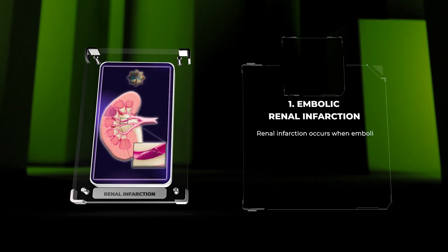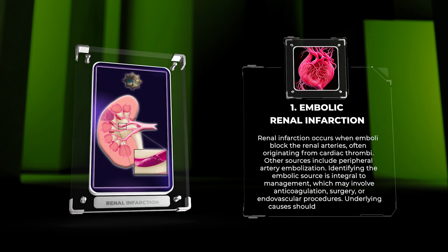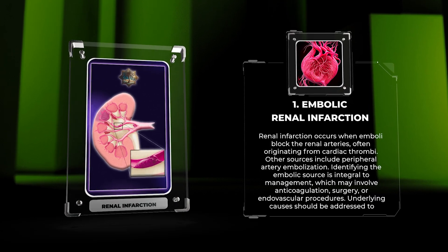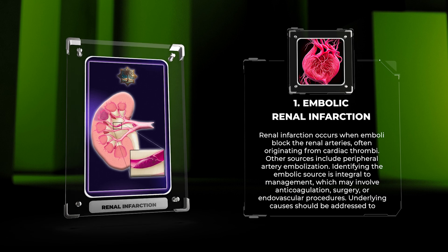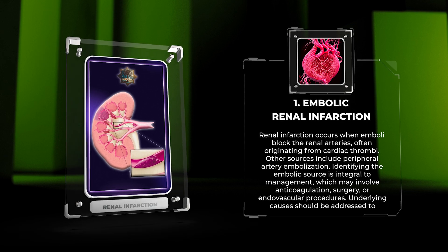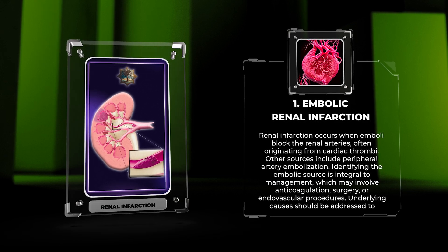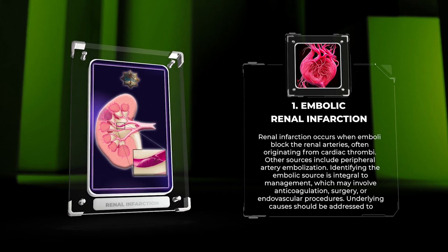Renal infarction occurs when emboli block the renal arteries, often originating from cardiac thrombi. Other sources include peripheral artery embolization. Identifying the embolic source is integral to management, which may involve anticoagulation, surgery, or endovascular procedures.